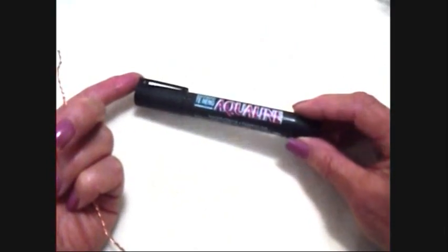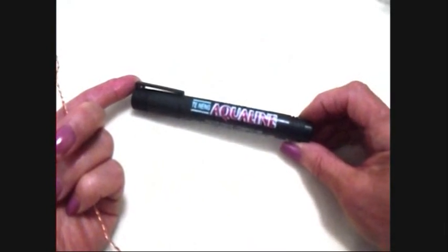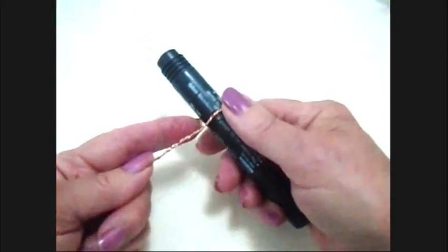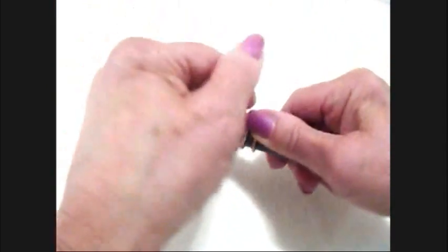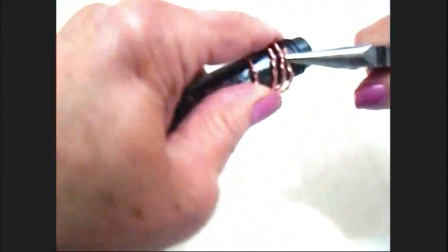I don't have a ring sizer so I'm just going to use a large marker and wind this around. Make sure that that's turned down. This end is also turned down.